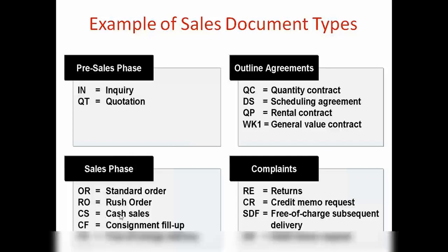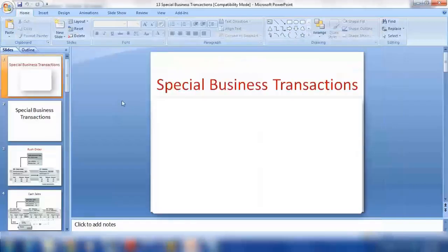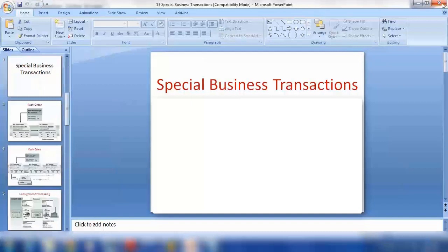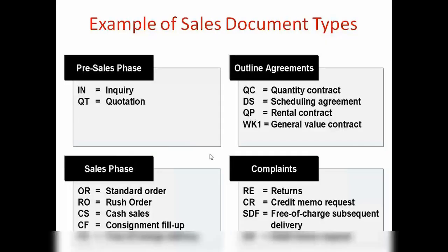We have seen some of these in the last class — rush order, cash sale, consignment pickup, consignment fill-up. We have also done complaints: how to create a return, a credit memo, a debit memo, a sales order, inquiry, and quotation. Coming soon we will also learn outline agreements, and how to handle rush orders, cash sales, consignment fill-ups. All of these are part of sales document types.